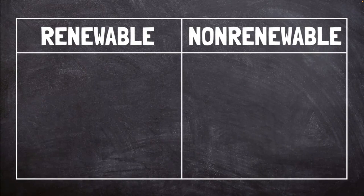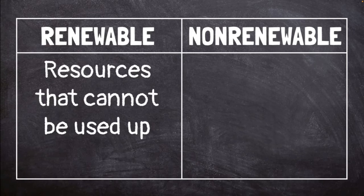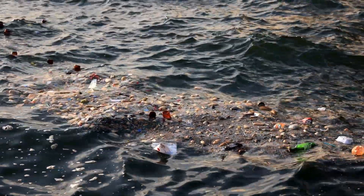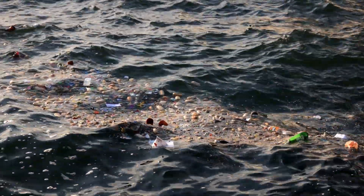Some natural resources are renewable and others are non-renewable. Renewable resources cannot be used up. We have an endless supply of sunlight, air, and water, although pollution can make them harder to use.